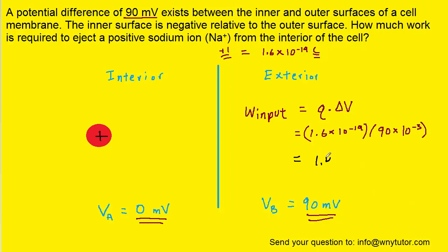And when we compute that, we should get approximately 1.4 times 10 to the minus 20. And then the unit for work will be the unit of energy, which is joules. So that is indeed the correct answer.